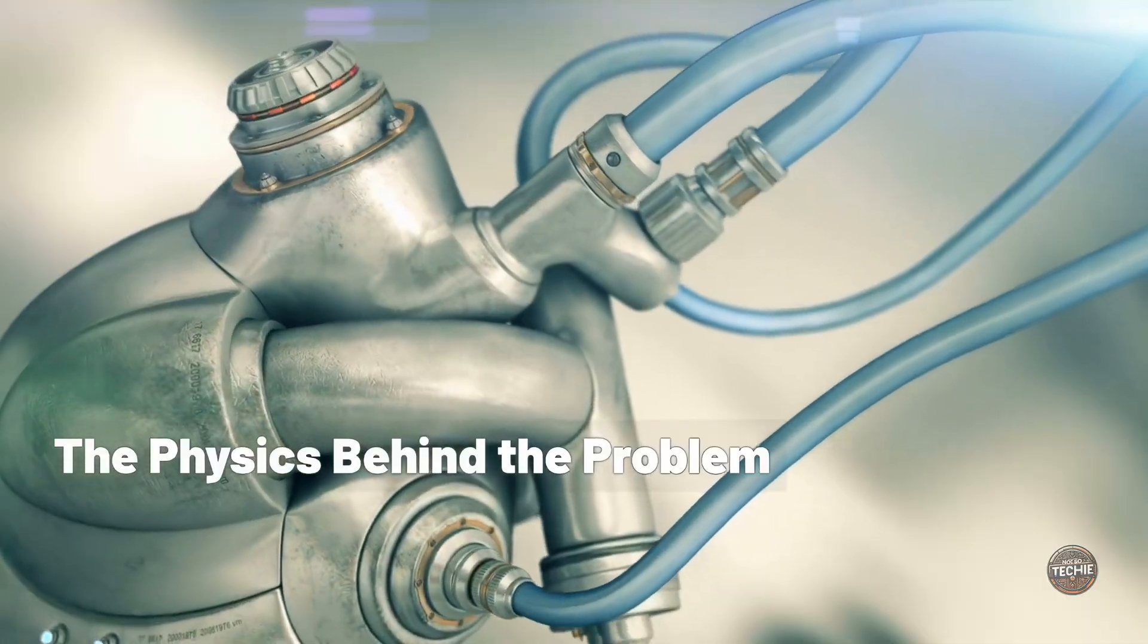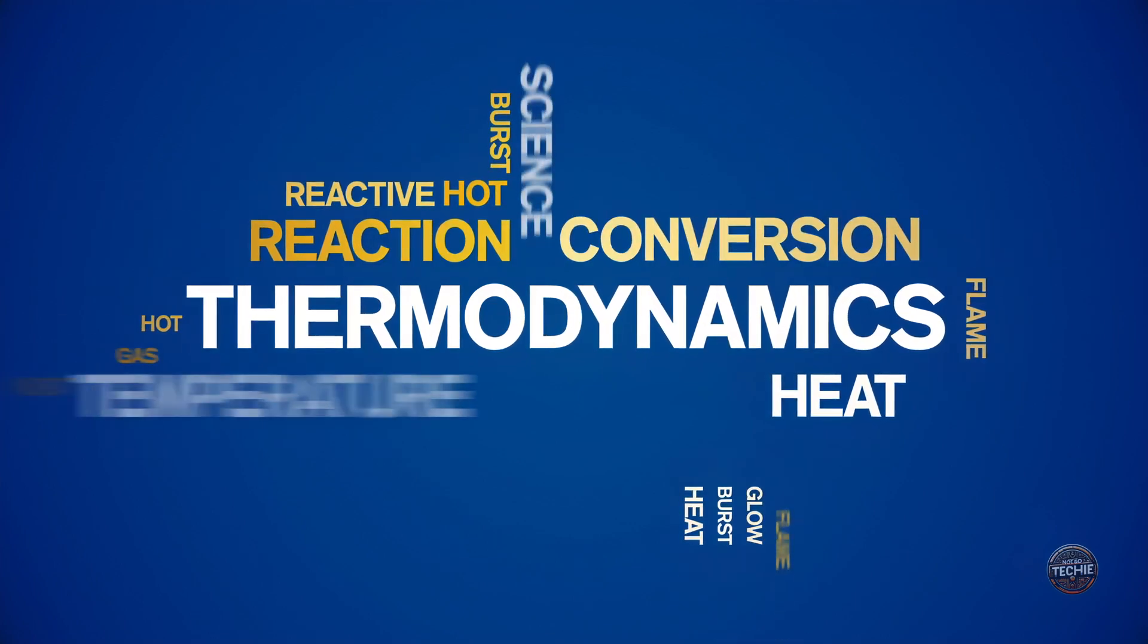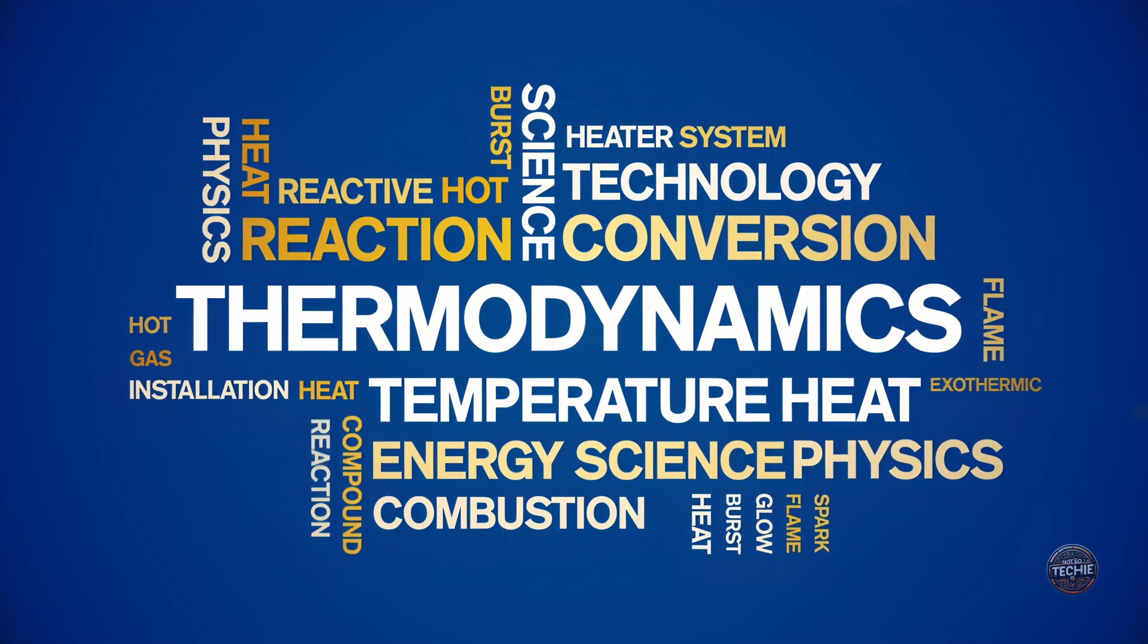The physics behind the problem. So, why don't perpetual motion machines work? The answer lies in physics, the first and second laws of thermodynamics, to be precise.